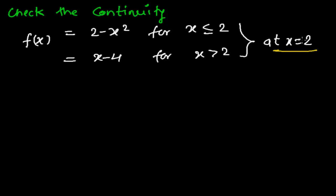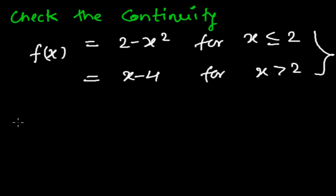First, let me repeat the condition of continuity. Any function becomes continuous when the left-hand limit, right-hand limit, and the value of the function at that point are all the same — that is, left-hand limit equals right-hand limit equals the value of the function at that point.